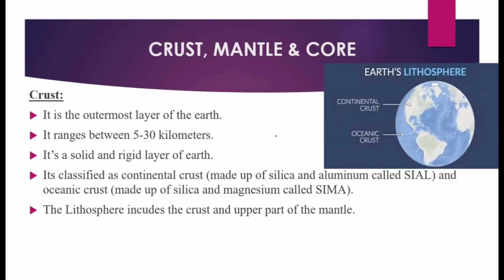The crust is the outermost layer of the Earth where we live. It is the skin of our Earth, ranging between 5 to 30 kilometers thick. It is solid and rigid, and its thickness is greater below the continents than below the ocean floor. The crust is classified into continental crust, made of silica and aluminum — called SIAL — and oceanic crust, made of silica and magnesium — called SIMA.